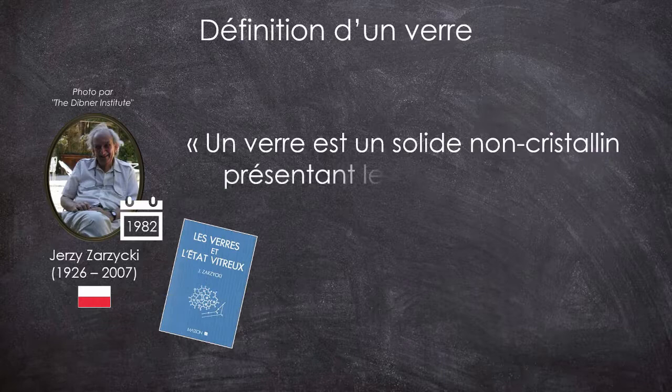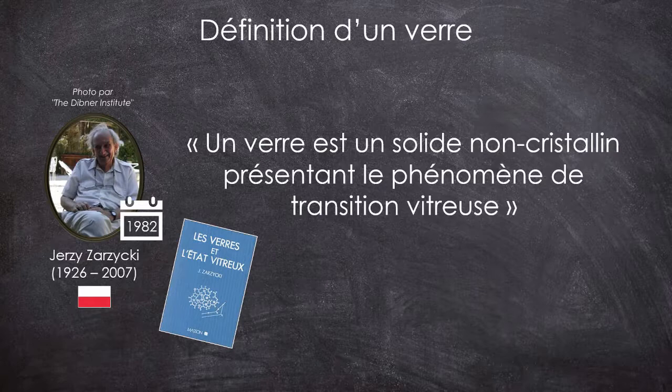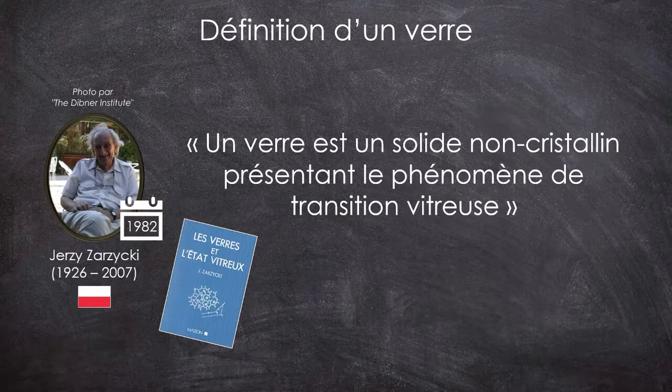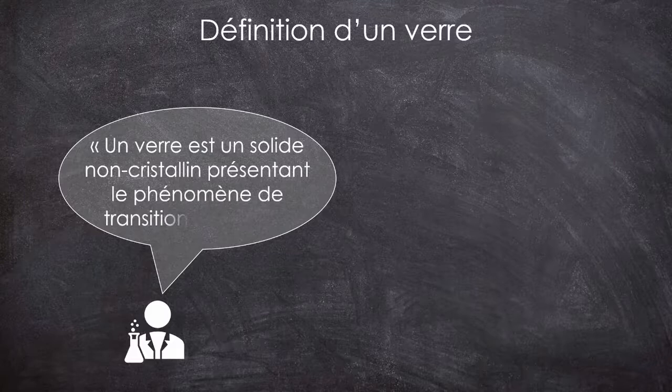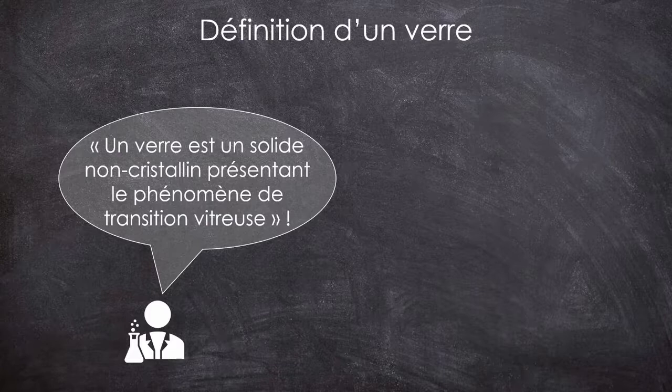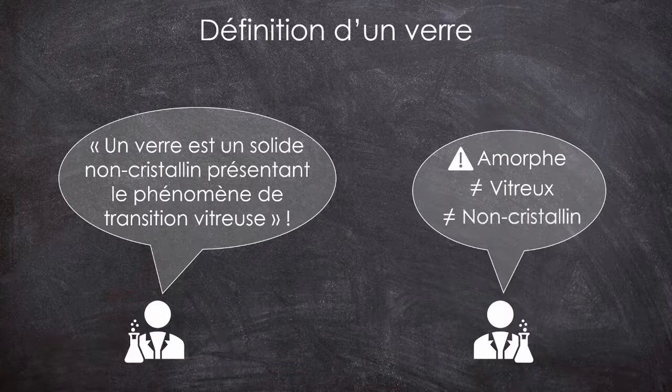L'avantage de cette définition, c'est qu'elle se défait complètement du procédé d'obtention, là où Scholz laissait penser qu'il fallait nécessairement passer par l'état liquide. On peut obtenir des verres de nombreuses autres manières, comme par voie gazeuse ou par voie chimique, ce que Mère Nature fait depuis longtemps, mais on en reparlera plus tard. Bref, pour le moment, c'est la définition de Zarzycki qui est la plus acceptée, même si comme souvent avec les matériaux, chacun fait un peu ce qu'il veut. Par exemple, certains font la distinction entre matériaux amorphes, matériaux vitreux et matériaux non cristallins, d'où la mise au placard de la définition de Tammann, même si celle-là est déjà largement suffisante pour approcher ces matériaux si particuliers.